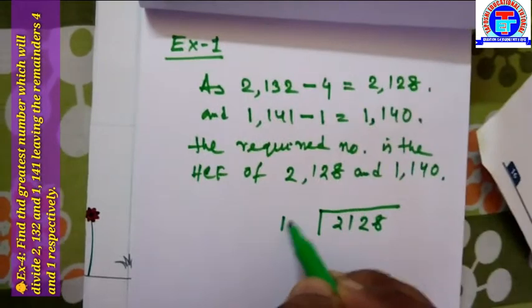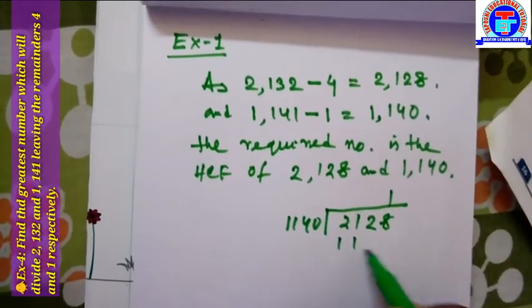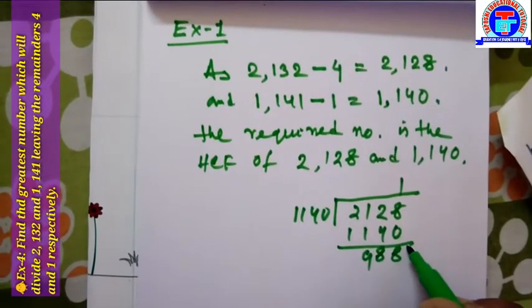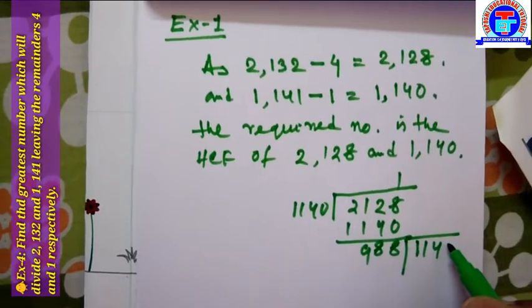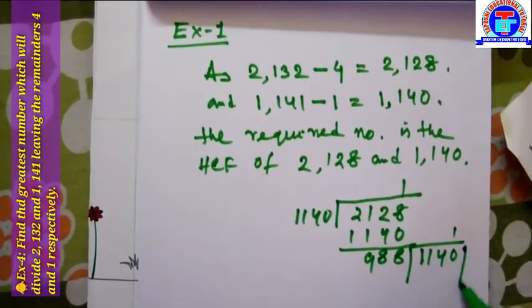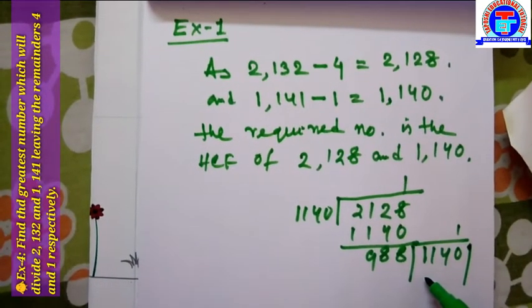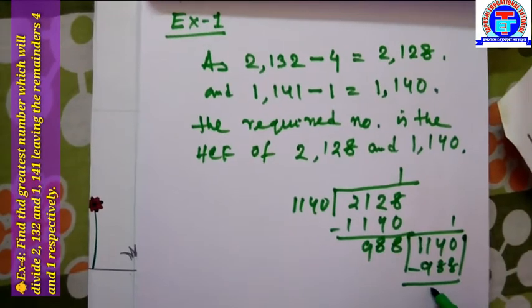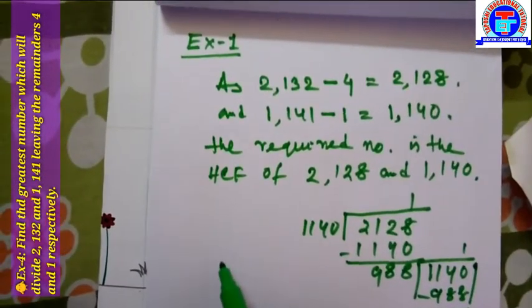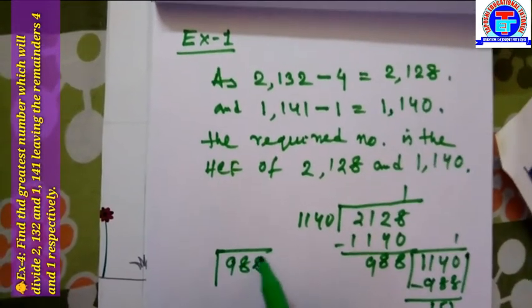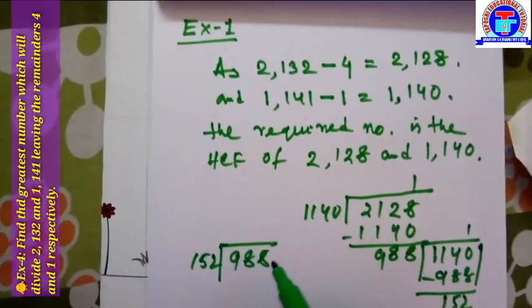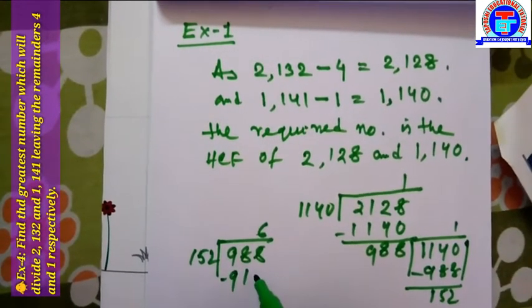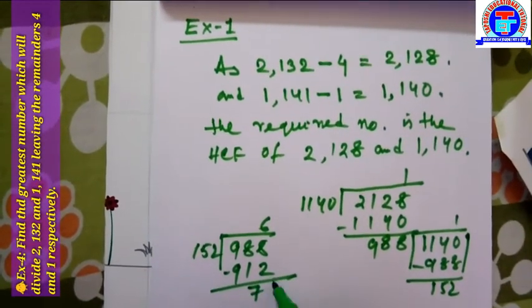Dividing 2128 by 1140: we get quotient 1, and subtracting 1140 from 2128 gives remainder 988. Then dividing 1140 by 988: we take 1, giving remainder 152. Then 988 divided by 152: we take 6, giving 912, subtracting to get remainder 76.